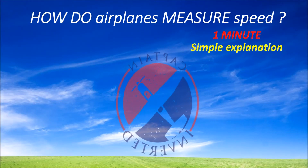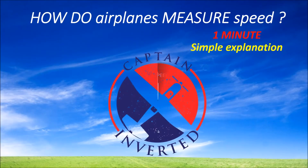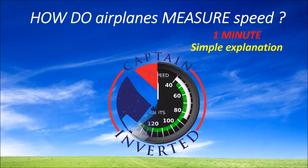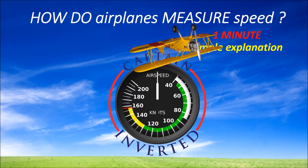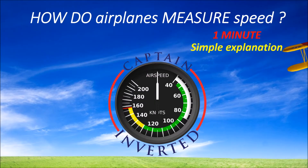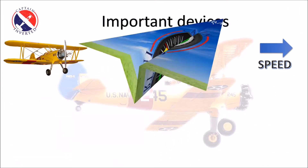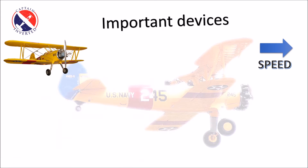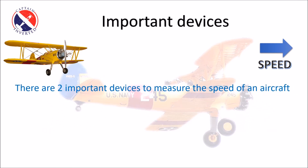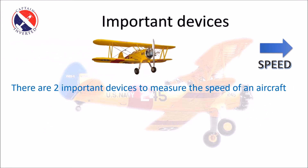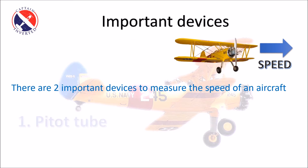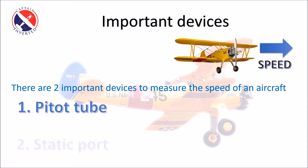Hi there and welcome to a new video about how airplanes measure speed. There are two important devices to measure the speed of an aircraft: the first one is the pitot tube, and the second one is the static port.